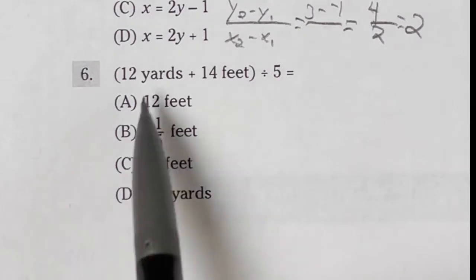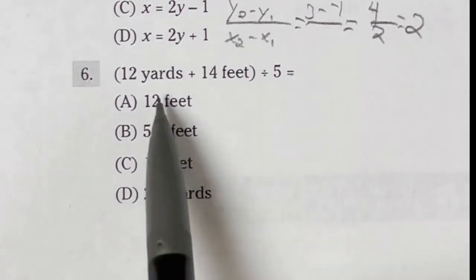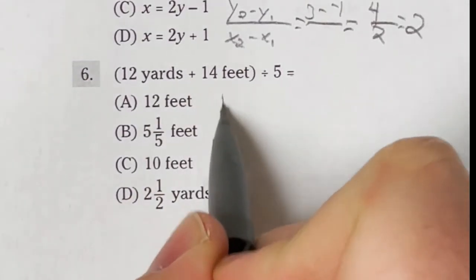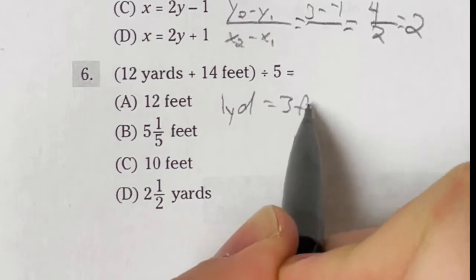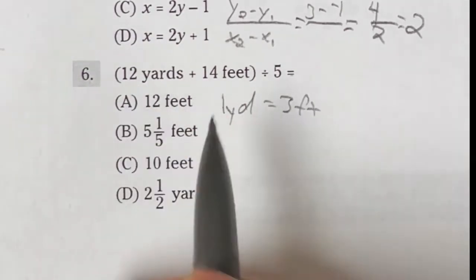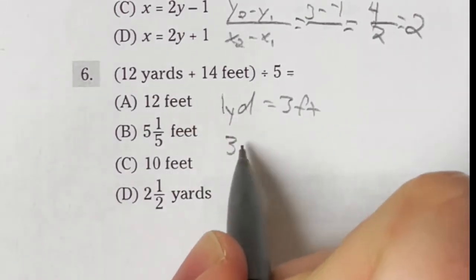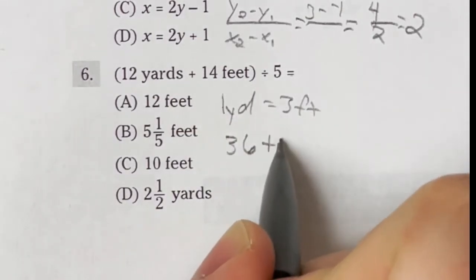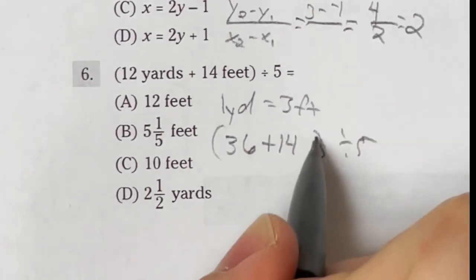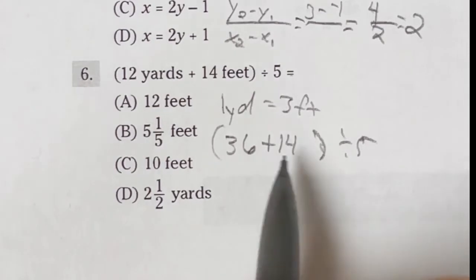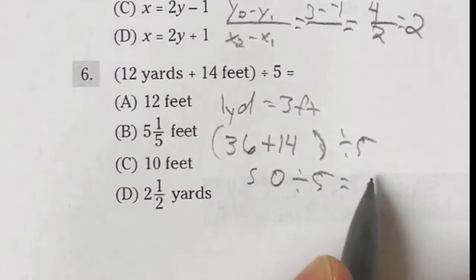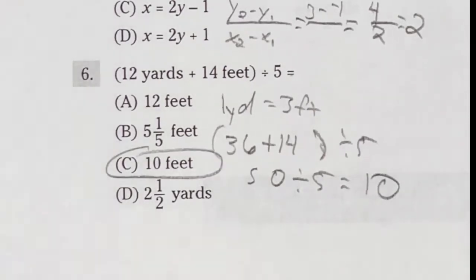Number 6 on the ASVAB says 12 yards plus 14 feet divided by 5 equals which of these? Well, first off, you probably need to know that 1 yard is equal to 3 feet. So that means if I'm converting these 12 yards into feet, I'm just going to multiply by 3, and 12 times 3 is going to give me 36. Now I do still need to add that 14 and don't forget we are still dividing by 5 in the end. So when we're looking at this, 36 plus the 14 is going to give me a total of 50. 50 divided by 5 is just going to be 10. Our answer here is C.